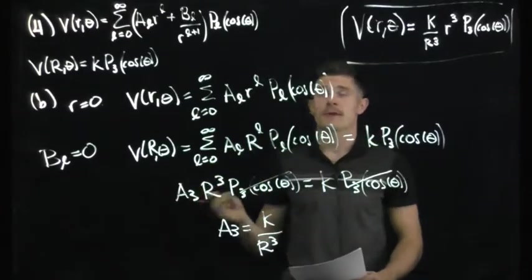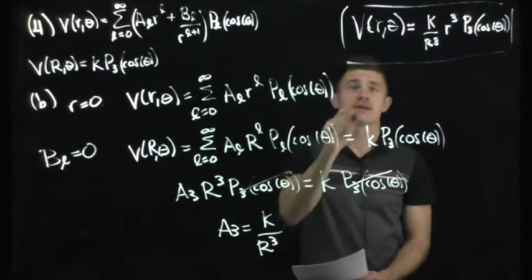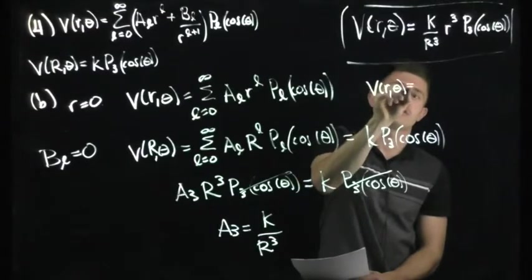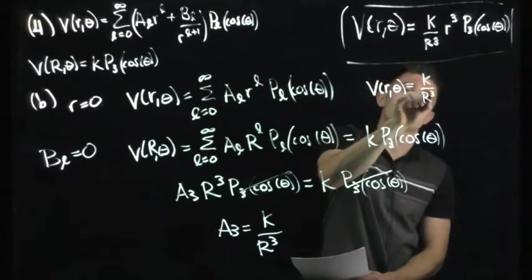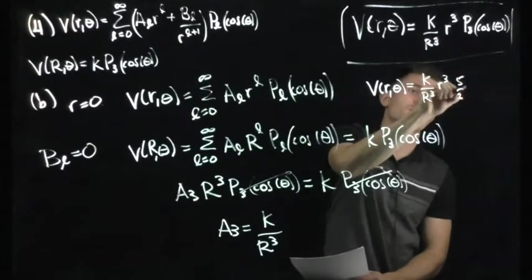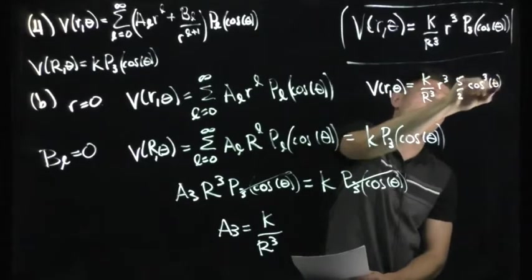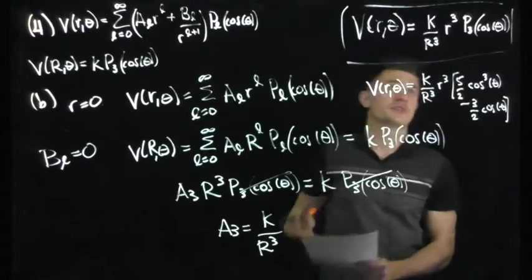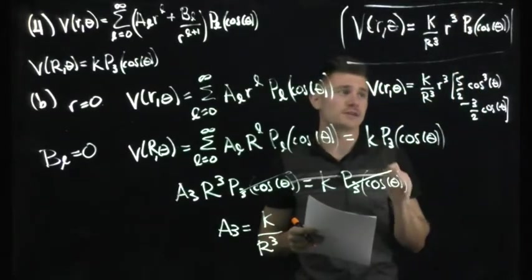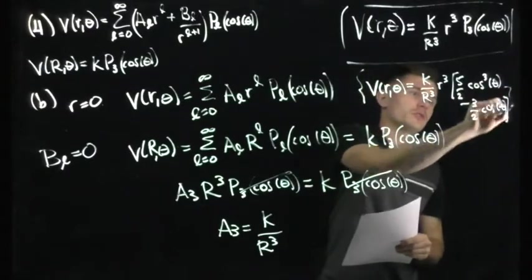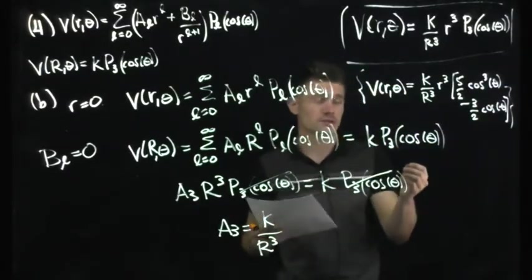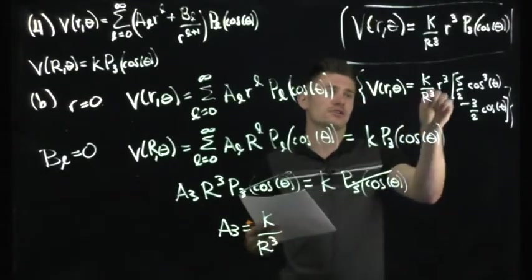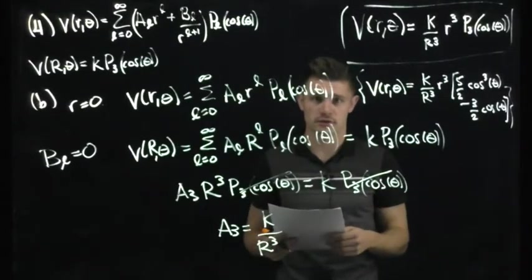From question 2 part A, we found what P₃(x) is explicitly. Substituting that in, V(r, θ) = (K/R³) · r³ · (5/2 · cos³θ − 3/2 · cosθ). This is the final general correct solution for the potential inside the sphere given the boundary conditions, with the Legendre polynomial P₃ fully expanded.